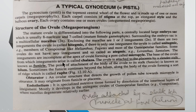The basal part of the ovule from where the integuments arise is known as the chalaza. So we have two ends: one is known as the micropilar end, present where the integuments are not complete, and the opposite end is known as the chalazal end, from where the integuments arise. This ovule is attached to the placenta by a stalk-like structure known as the funicle.